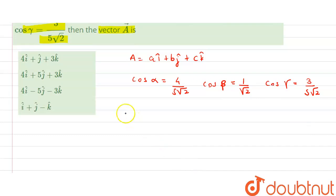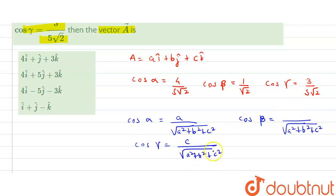We know that cos α is equal to a/√(a² + b² + c²), cos β is given by b/√(a² + b² + c²), and cos γ equals c/√(a² + b² + c²).